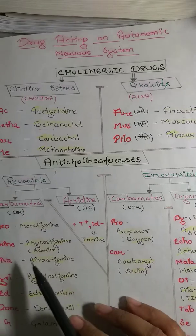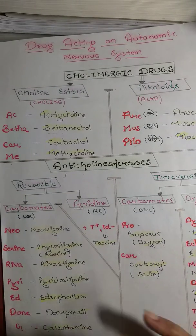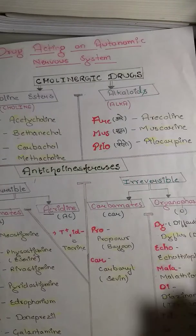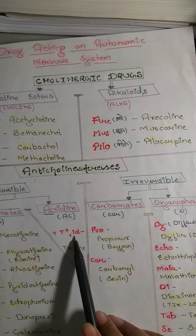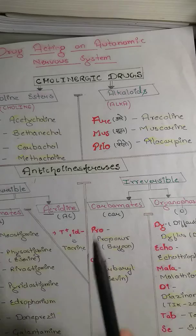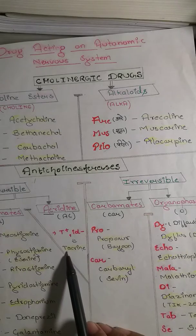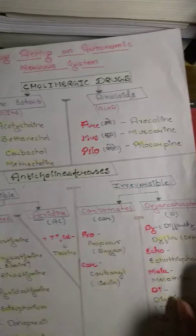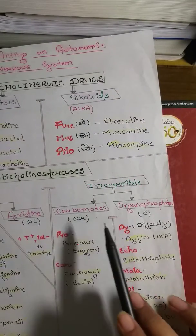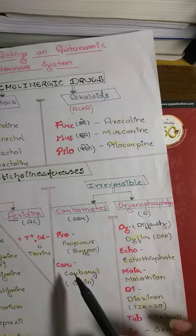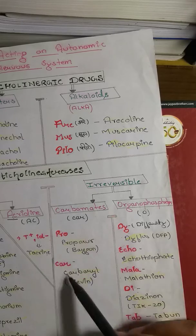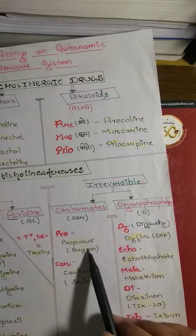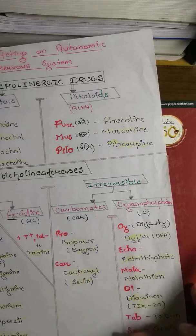Quick recap of reversible drugs: Neo, Riva, Pyri, Ad, Dant, G. For Acridine — take the word, add T and remove ID — you get Tacrine. For Carbamates, the easy learning is: they had a Pro-Car, meaning Procarb, so we get Propoxur and Carbaryl.